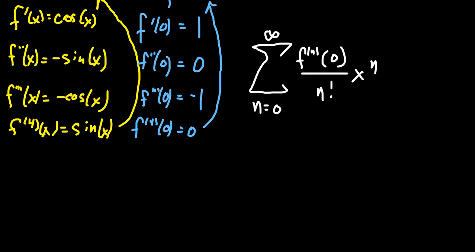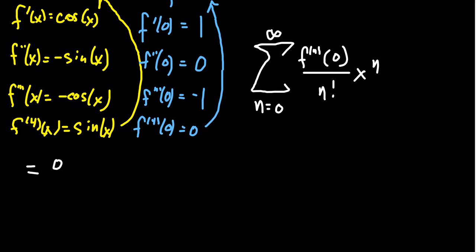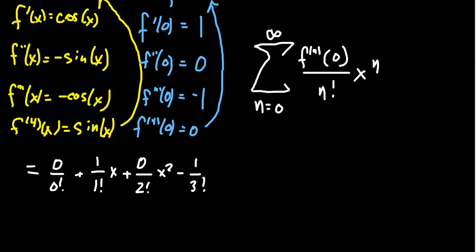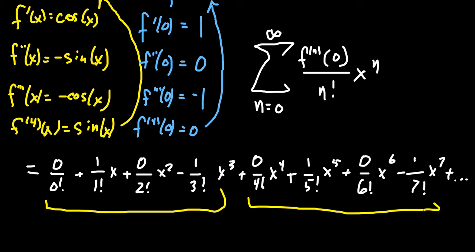If we write this in expanded form, we get: the constant term is 0 over 0 factorial, then plus 1 over 1 factorial times x, then 0 over 2 factorial times x squared, then minus 1 over 3 factorial times x cubed — that's one complete cycle. The second cycle gives: 0 over 4 factorial times x to the 4th, plus 1 over 5 factorial times x to the 5th, plus 0 over 6 factorial times x to the 6th, then minus 1 over 7 factorial times x to the 7th, and the pattern repeats.